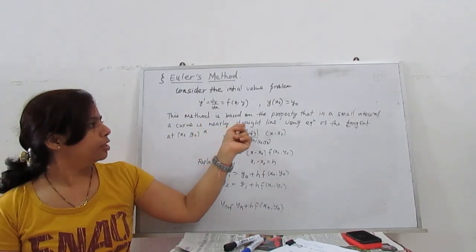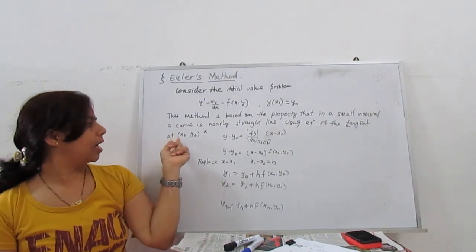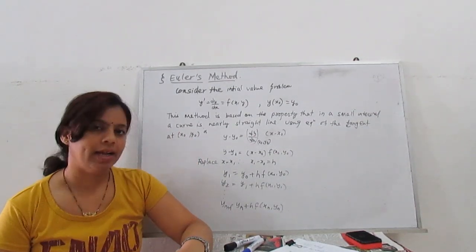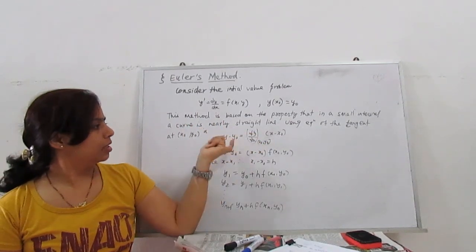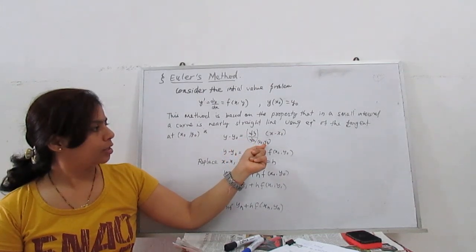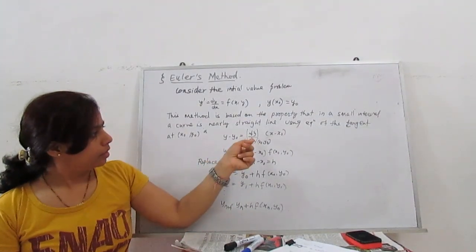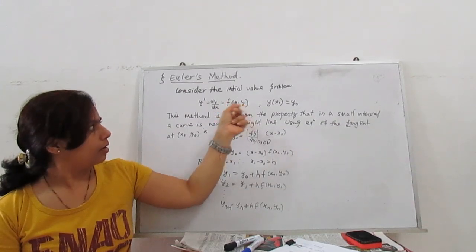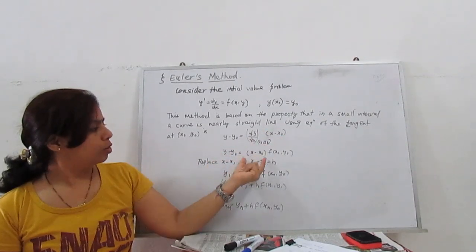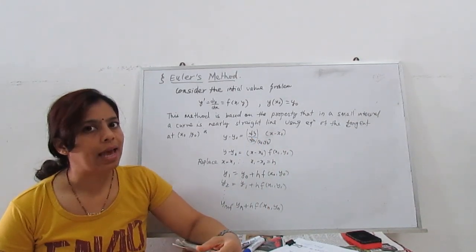The curve is nearly a straight line, so we use the equation of the tangent at point (x0, y0). The tangent line equation is: y minus y0 equals dy/dx times (x minus x0). Here dy/dx is our function f(x, y) evaluated at point (x0, y0), giving us y minus y0 equals f(x0, y0) times (x minus x0).